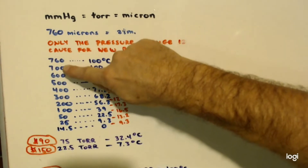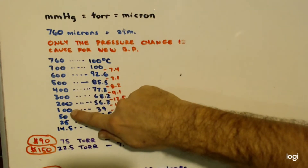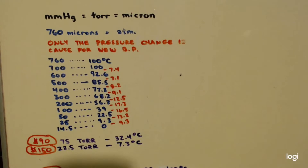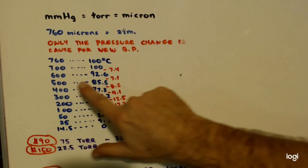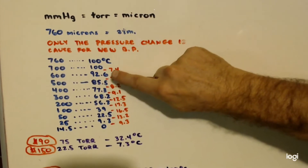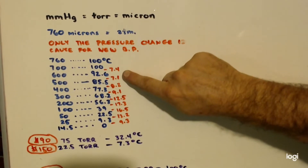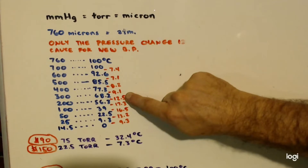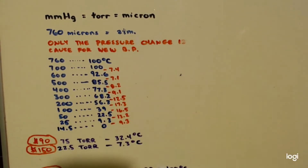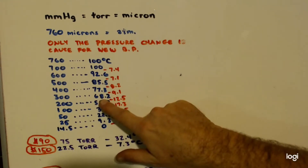I went from 760 down to 700, then kept going down 100 at a time until I got to 100, then went in halves: 50, 25, and then 14.5. I'm showing the different boiling points. At 700 Torr you're still boiling at 100°C — you didn't change the boiling point. At 600 Torr, from 700 to 600 is a 7.4°C difference; from 600 to 500 is 7.1°C. Every 100 Torr it goes down about 7 degrees. But when it gets down to 300 Torr it starts jumping more — 12, 17 degrees. Even at 300 Torr, halfway through your vacuum, you've only lowered the boiling point by about 31.8 degrees.